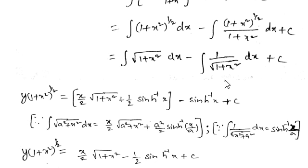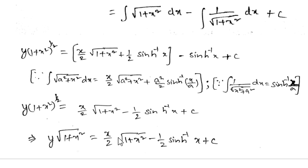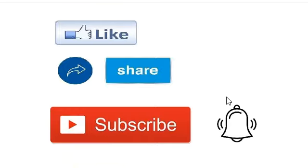Simplifying: y·(1 + x²)^(1/2) = (x/2)√(1 + x²) + (1/2)·sinh⁻¹(x) − sinh⁻¹(x) + c, which gives (x/2)√(1 + x²) − (1/2)·sinh⁻¹(x) + c. Writing (1 + x²)^(1/2) as √(1 + x²), the general solution is: y·√(1 + x²) = (x/2)·√(1 + x²) − (1/2)·sinh⁻¹(x) + c.